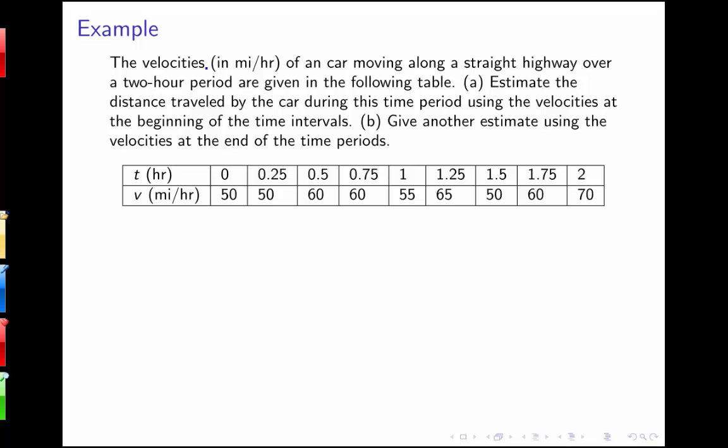In this example, we're given the velocities in miles per hour of a car moving along a straight highway over a two-hour period. We're interested in estimating the distance traveled by the car during this time period using velocities at the beginning of the time intervals. We're given multiple time intervals here. Each interval has width a quarter of an hour. My first interval goes from 0 to 0.25, the next interval from 0.25 to 0.5, etc. I'm going to have eight different time intervals here.